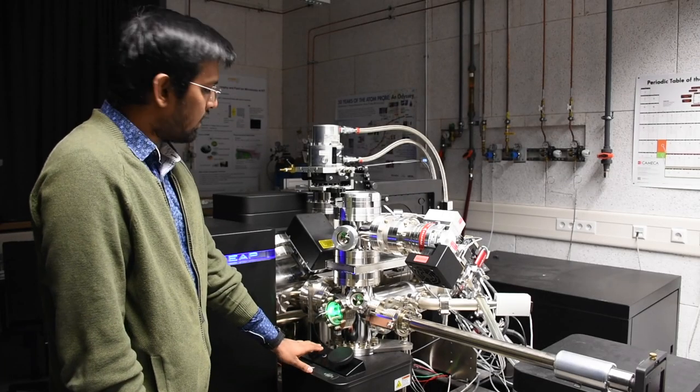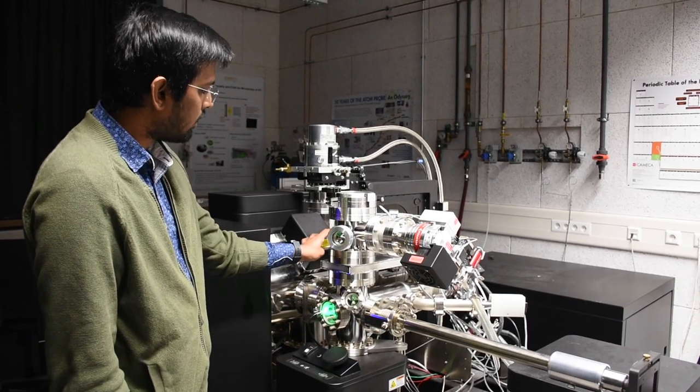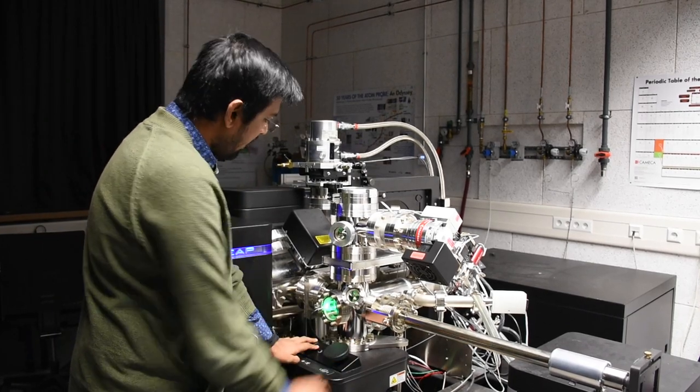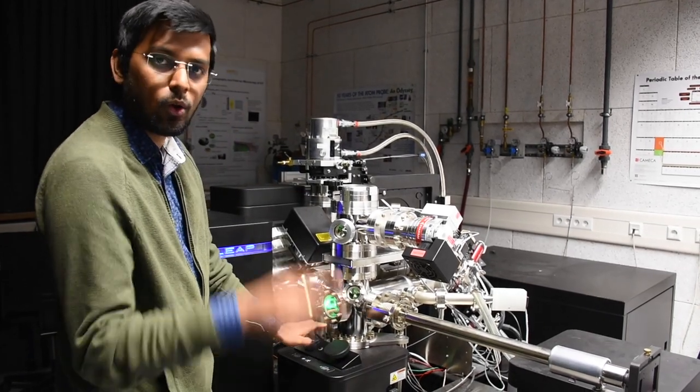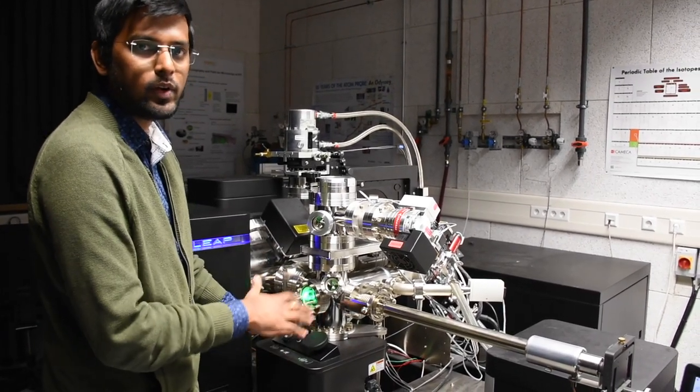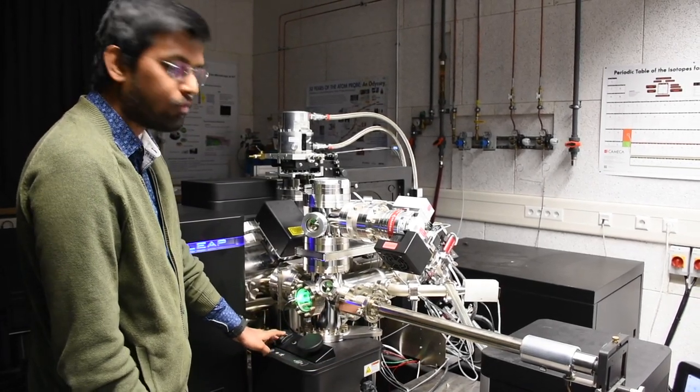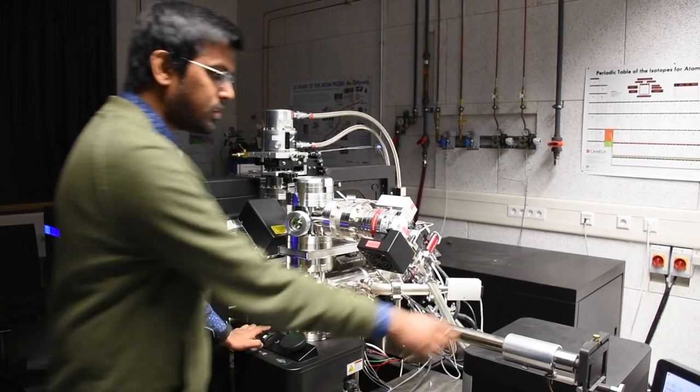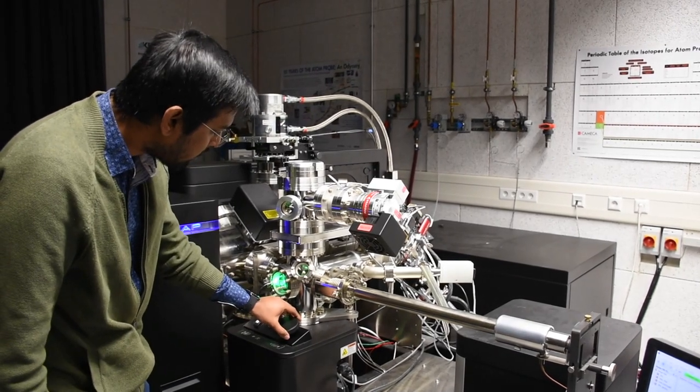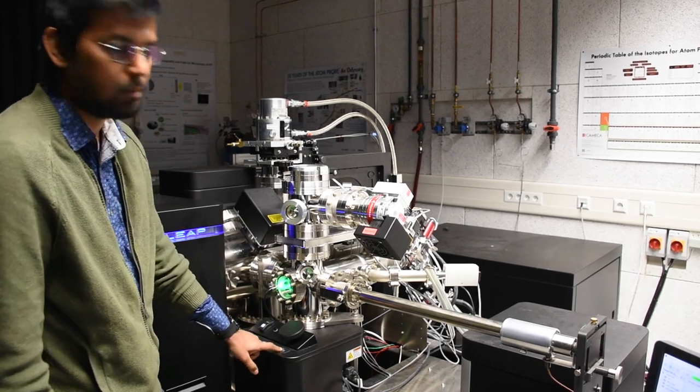So we moved our sample from the load lock to the buffer chamber. The load lock carousel itself was moved to the buffer chamber using this vertical manipulator. Now we are going to move the sample from the load lock carousel to a buffer carousel. We have another carousel because we don't want to expose the buffer carousel to the atmosphere. To move the sample, we use this horizontal manipulation rod while controlling the movement of the carousels using the vertical rotation.